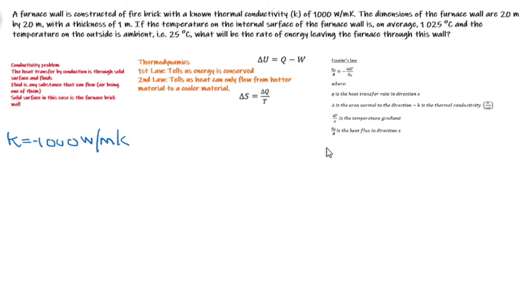We are given area to be 20 times 20 meters squared. We are given X to be 1 meter. Temperature 2 is given to be 25 degrees Celsius and this can be converted to Kelvin. Remember that all you have to do is add 273 and if we add 273 to this, it should give us 298 Kelvin.